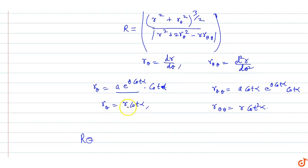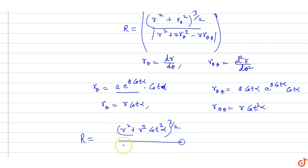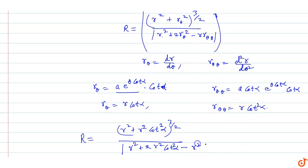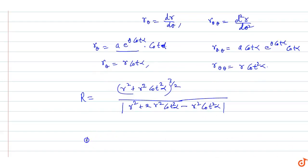Now computing the radius of curvature: numerator is (r² + r_θ²)^(3/2) = (r² + r²·cot²α)^(3/2) = r²(1 + cot²α) raised to 3/2. The denominator is r² + 2·r_θ² minus r·r_θθ = r²·cot²α terms, giving r²·cosec²α after substitution.